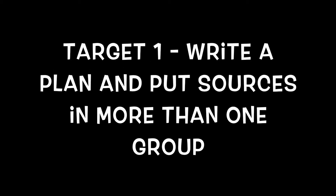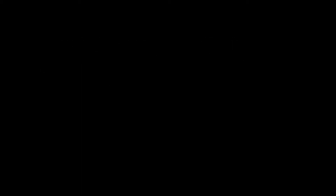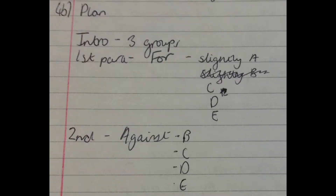Target 1 comes straight from OCR. The examiners love to see a plan. Not only that, they love to see that you've put sources in more than one grouping and that you have three groupings. You might not have thought of your third grouping yet — maybe you think of it through the assessment — but if you can, you can pop it there in your plan.